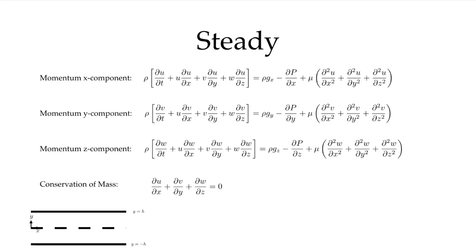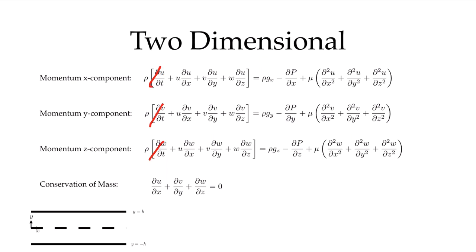Let's first use the steady assumption. Steady means not varying in time, so all derivatives with respect to time go to zero — we can cancel out all time derivative terms in the equations. Now applying two-dimensional: all variations in the z direction cancel out, and the w velocity component is zero throughout.